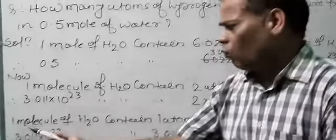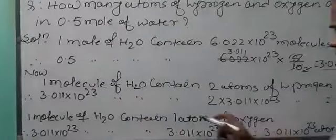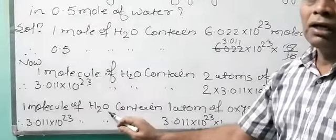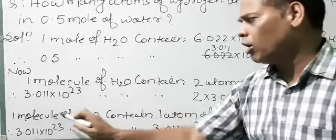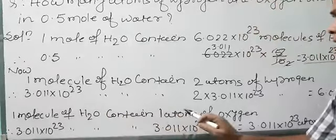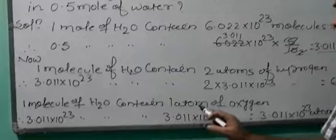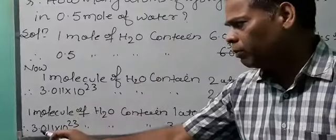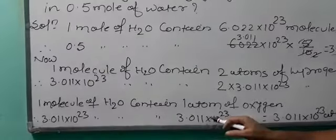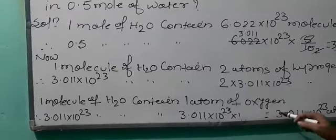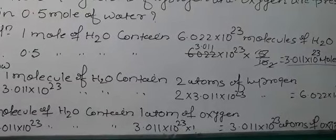Now for oxygen: 1 molecule of H₂O contains 1 atom of oxygen. From the formula, the number of oxygen atoms is 1. Therefore, 3.011 × 10²³ molecules of water contain 3.011 × 10²³ × 1, which equals 3.011 × 10²³ atoms of oxygen.